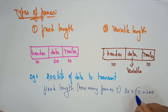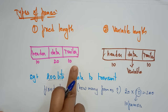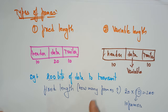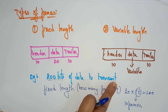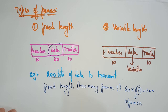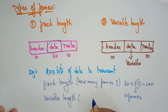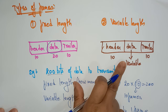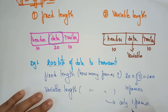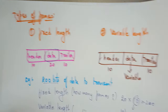So each frame consists of 20 bits of data, because 20 is the fixed size. The header and trailer carry extra information — frame start, addressing — but the exact data per frame is 20 bits. With 10 frames, the 200 bits of data will be transmitted. If it is a variable length, you require only one frame — in one frame you can transfer all 200 bits at once. This is the main difference between fixed length and variable length frames.